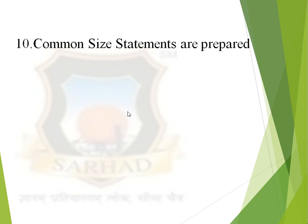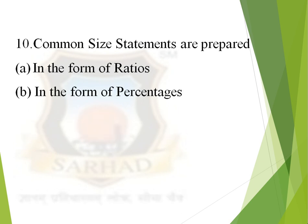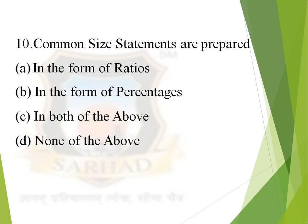Next question: common size statements are prepared — options are: first, in the form of ratios; second, in the form of percentage; third, in the form of both; and fourth, none of these. The correct answer is in the form of percentage.